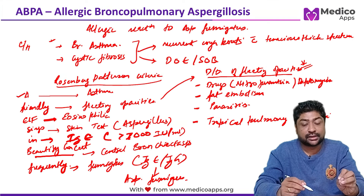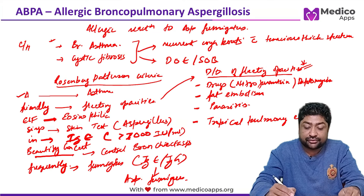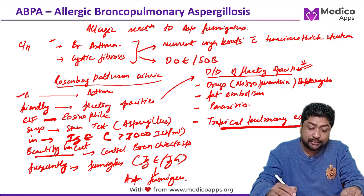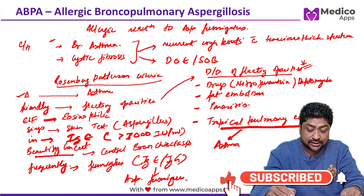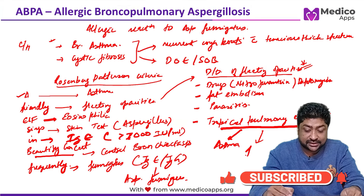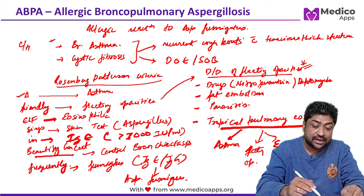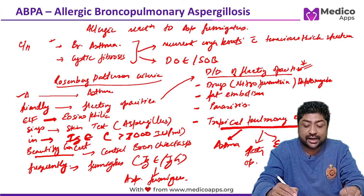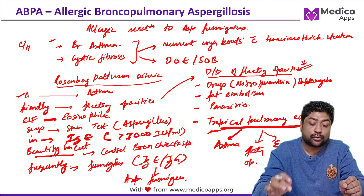If all these criteria are not fulfilled, a differential diagnosis of tropical pulmonary eosinophilia should be considered, as it shares three criteria: asthma, fleeting opacities, and eosinophilia. In many cases where a complete diagnosis of ABPA cannot be made, tropical pulmonary eosinophilia is the diagnosis.